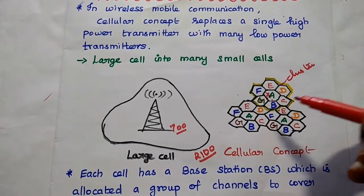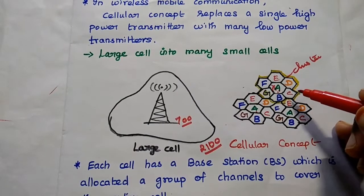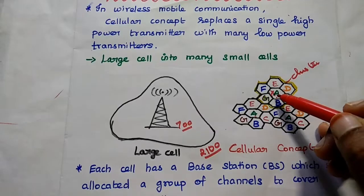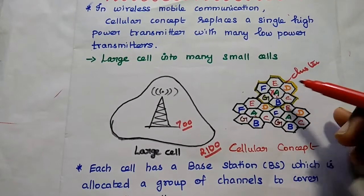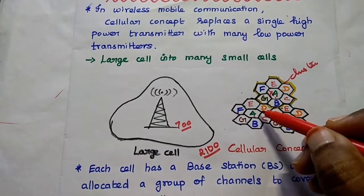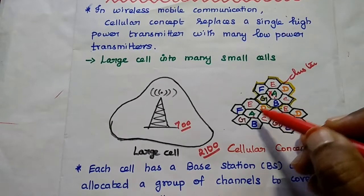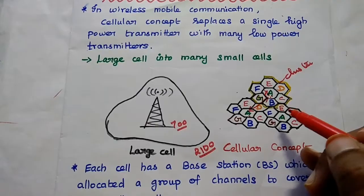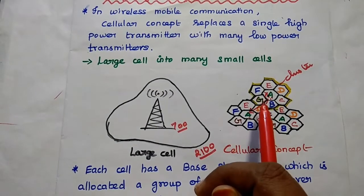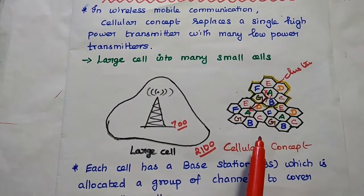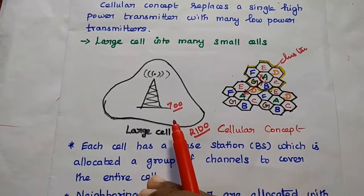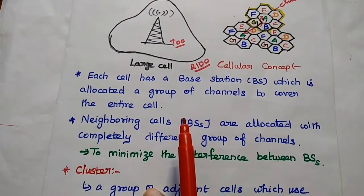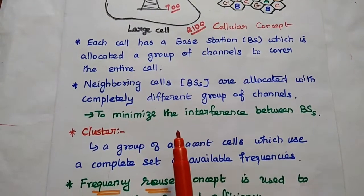Frequency reuse is widely used to improve the spectral efficiency of the mobile communication system. All cells with the same letter can use the same set of frequencies. Neighboring cells should not use the same frequencies, but a cell that is a sufficiently large enough distance away can reuse the same set of frequencies. So cells labeled A, and similarly G cells across clusters, all share the same frequency set, ensuring the distance is large enough to reduce frequency interference. With 700 frequency channels, we can support 2,100 users within that area using the frequency reuse concept.